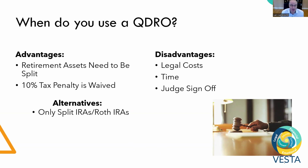So if there's enough money in IRAs, you could facilitate transfers there. You could also consider splitting non-retirement assets. And if you have equity in your house, that might be taken into consideration. For example, maybe one spouse keeps their 401(k) and the other spouse gets to keep the house to equalize them.